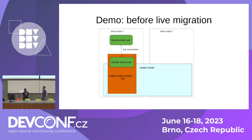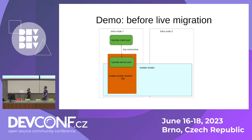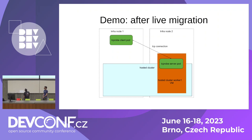Now we're going to do a real demo. We have a pair of nodes, a host cluster, and worker VMs. We have a client pod that opens one TCP connection to a server running some simple software called TCP Proof. We open one connection, and if it gets broken, the server goes down — making it easy to see if the TCP connection is broken. We then do a live migration, and in the same hosted cluster, the pod goes from one node to the other, and the TCP connections are kept.